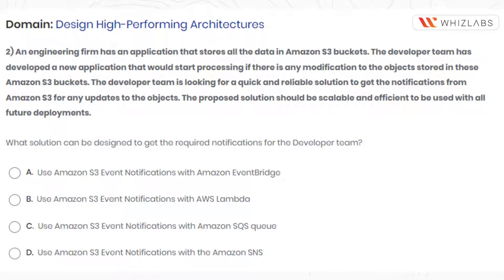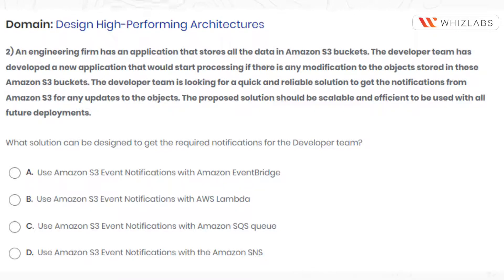Question number two. An engineering firm has an application that stores all the data in Amazon S3 buckets. The developer team has developed a new application that would start processing if there is any modification to the objects stored in these Amazon S3 buckets. The developer team is looking for a quick and reliable solution to get notifications from Amazon S3 for any updates to the objects. The proposed solution should be scalable and efficient to be used with all future deployments. What solution can be designed to get the required notification for the developer team?